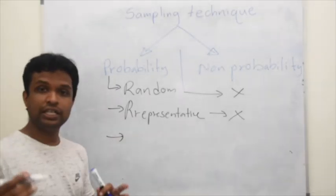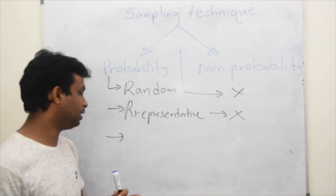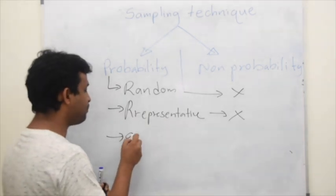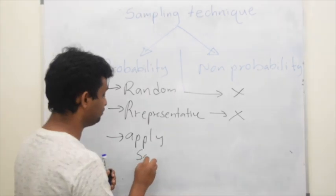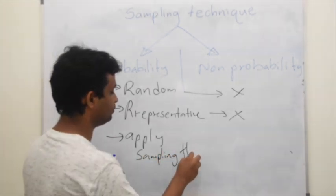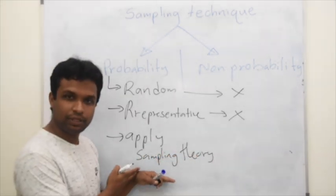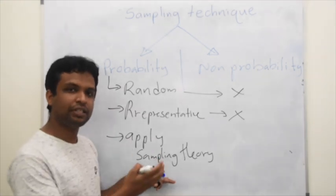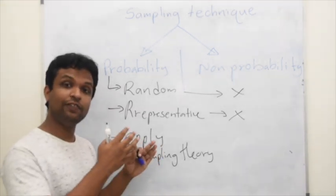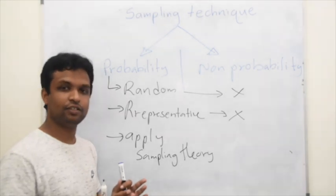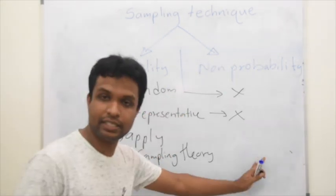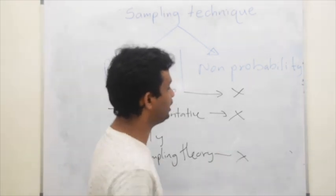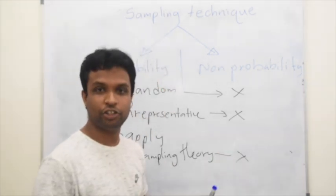Also, there is a very important mathematical part. That is, we apply something called sampling theory. What is sampling theory? That is the mathematical process which I will omit because this lecture series is for non-mathematical students. In non-probability sampling, we do not apply the sampling theory.